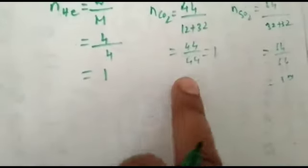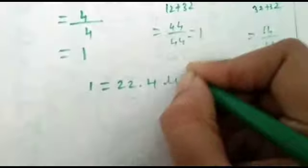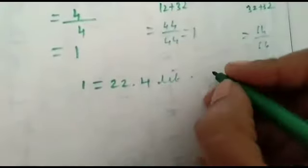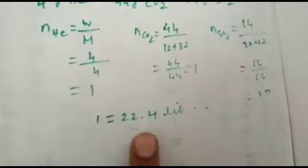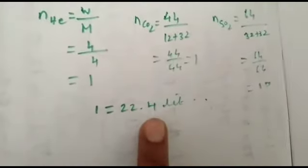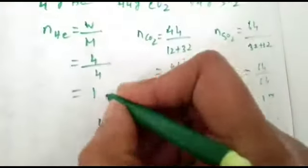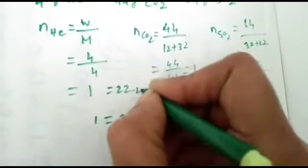But the gaseous state, all are 1 mole. So 1 mole means 22.4 liters of gas is occupied by volume. 1 mole of any gaseous substance at STP occupies 22.4 liters. So how to call it means 1 mole equals 22.4 liters.